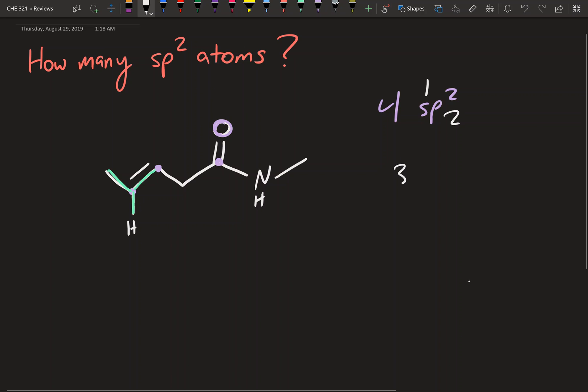If it would be bound to 4 things, it would be sp3, because 1s and 3ps gives us a total of 4. So that's like a quick shortcut way. So that one carbon is sp2. This one is the same as that one. We're going to have it bound to 1 hydrogen and 2 carbons. That's a total of 3 things, sp2.